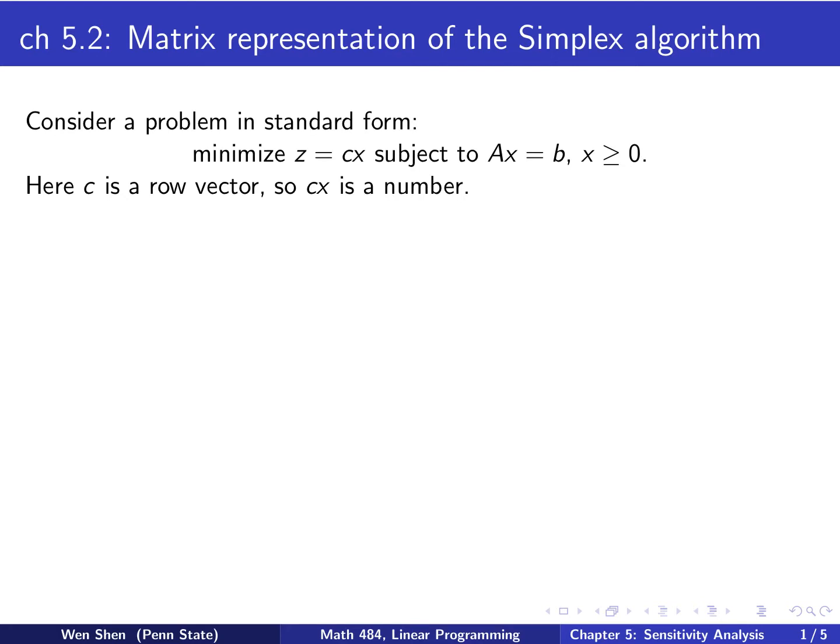Let's consider a linear programming problem in standard form: minimize z equals cx subject to Ax equals b, x greater than 0. Here we let c be a row vector so cx is a scalar. When we solve this, we set it up in the tableau. The A matrix will be here, b vector here, c vector as a row, and z naught is a number.